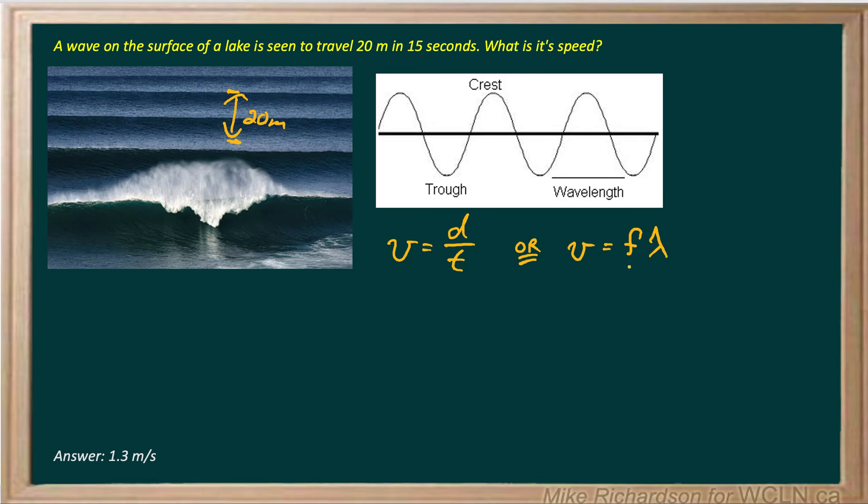Well we don't know what the frequency is. We don't know how often the waves are arriving and we don't know the specific wavelength. Wavelength is the distance from crest to crest or from trough to trough and we don't know that. We just know a general distance, 20 meters.